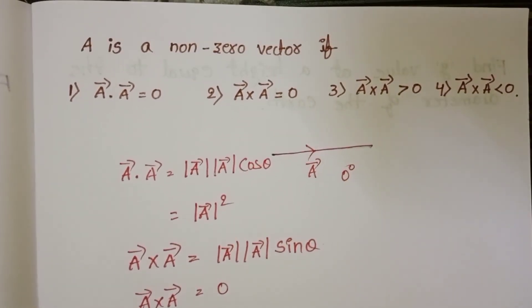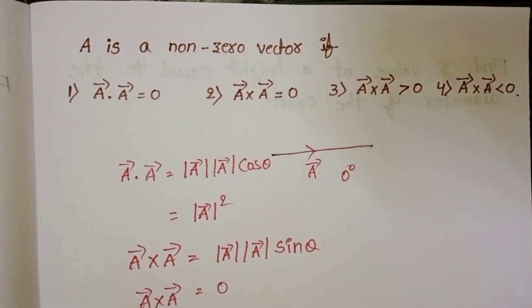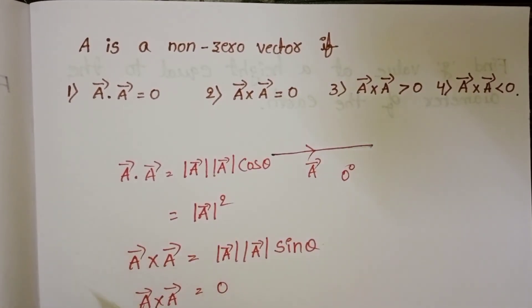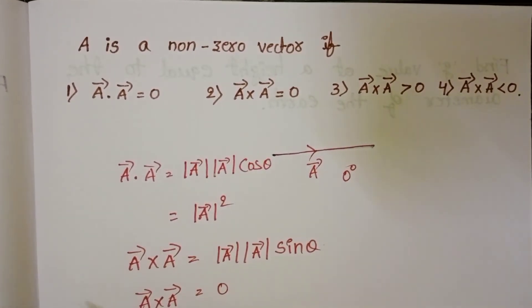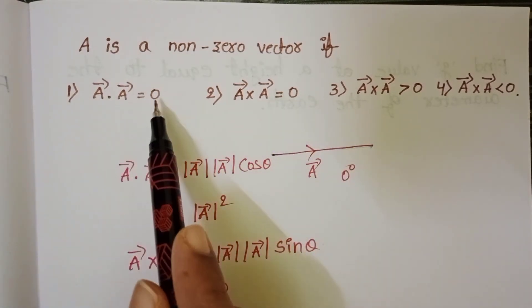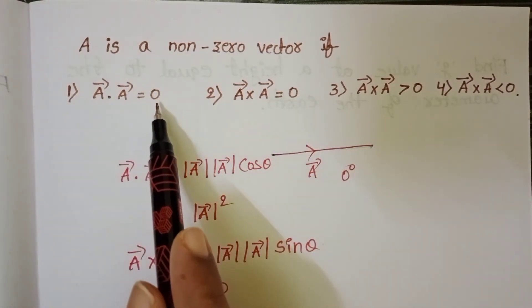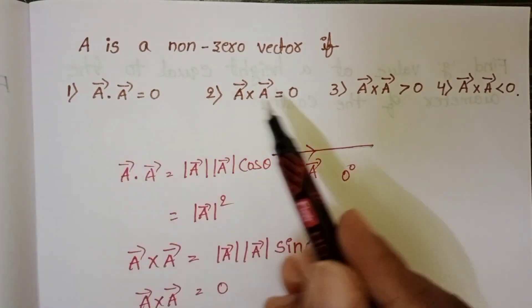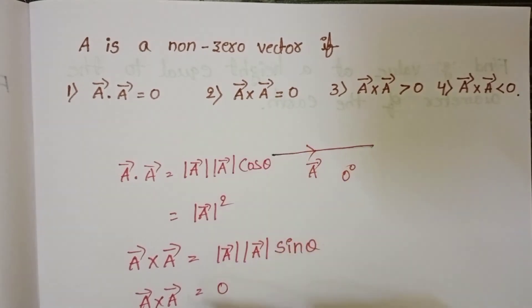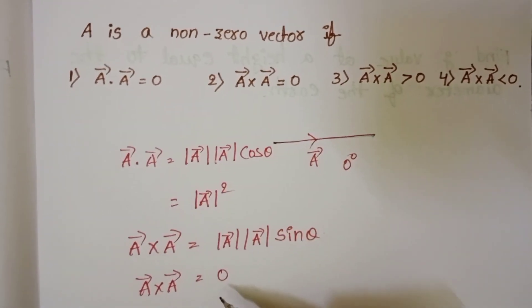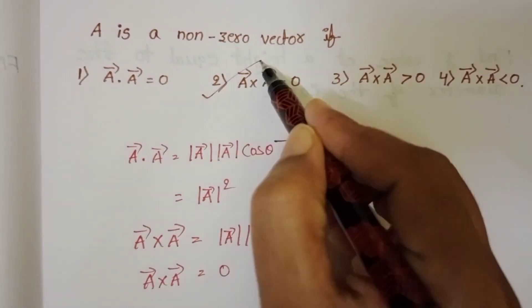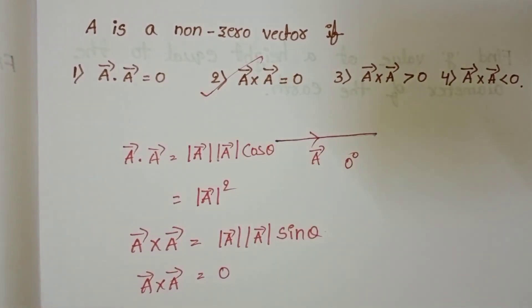Now check the options. A is a non-zero vector if a·a ≠ 0, and a × a = 0. So the second option is correct.